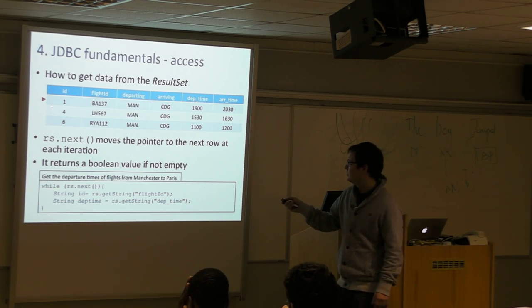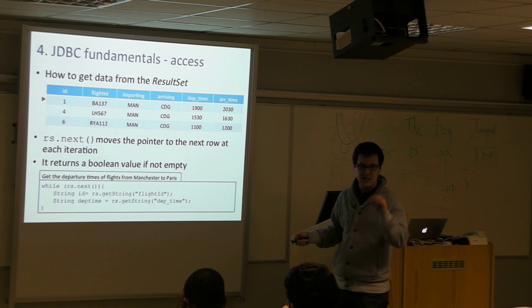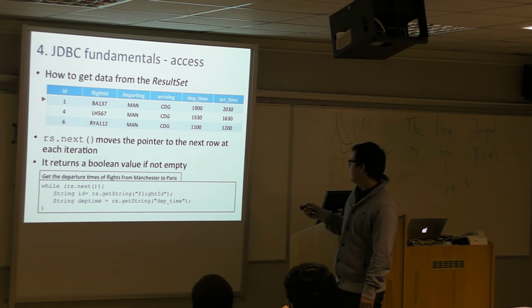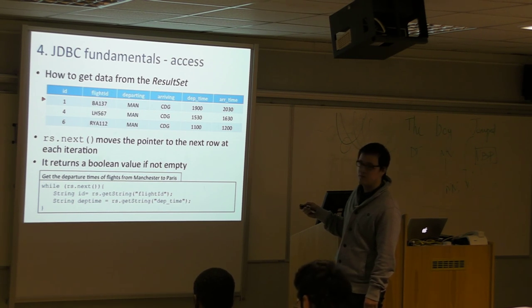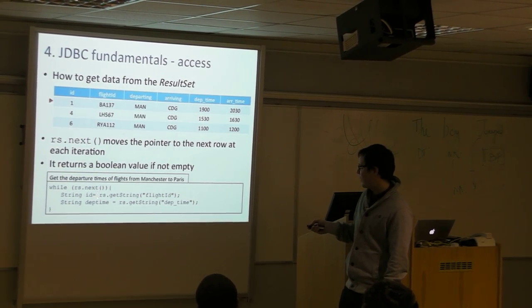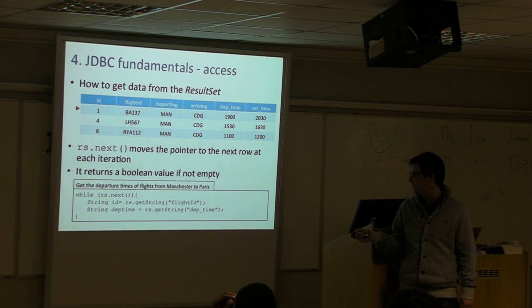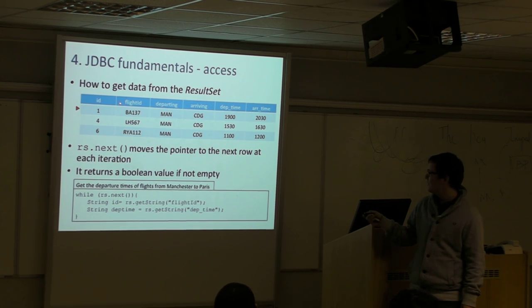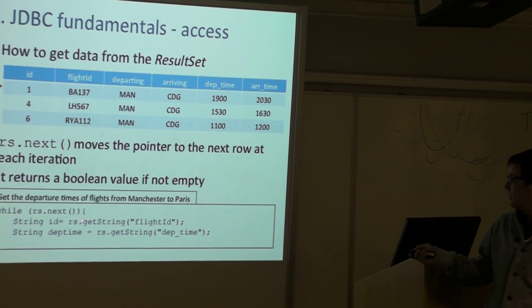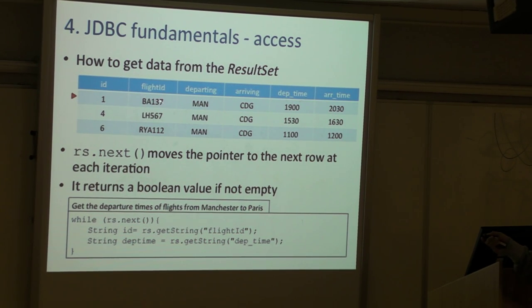Once we have the pointer in a determined row, we don't want the whole row but maybe some specific values. We want to get the ID number of these flights to Paris and the departure time. The ResultSet object has methods that allow us to retrieve specific data. If we want to get the flight ID and we know in the database it's declared as a string, we just say rs.getString and its attribute name is flight ID, and you'll get this value for each row while you iterate.